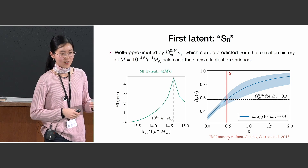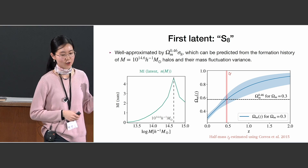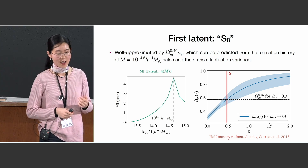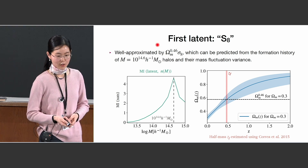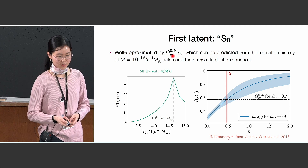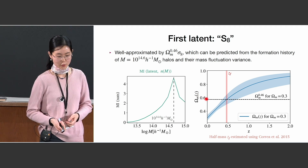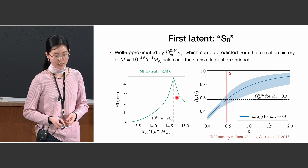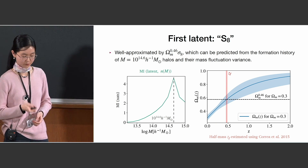We find the cosmological dependence of this first latent variable is well approximated by the parameter combination that is roughly the square root of Ω times σ₈. We know that cluster abundance is sensitive to roughly this parameter combination, so it is quite reassuring that the model is finding sensible and relevant quantities. We are also able to predict this parameter combination from the formation history of the halos and the mass fluctuation variance. The power of 0.46 on Ω is related to the matter density at the higher redshift when halos with a mass of 10^14.6 solar masses form.